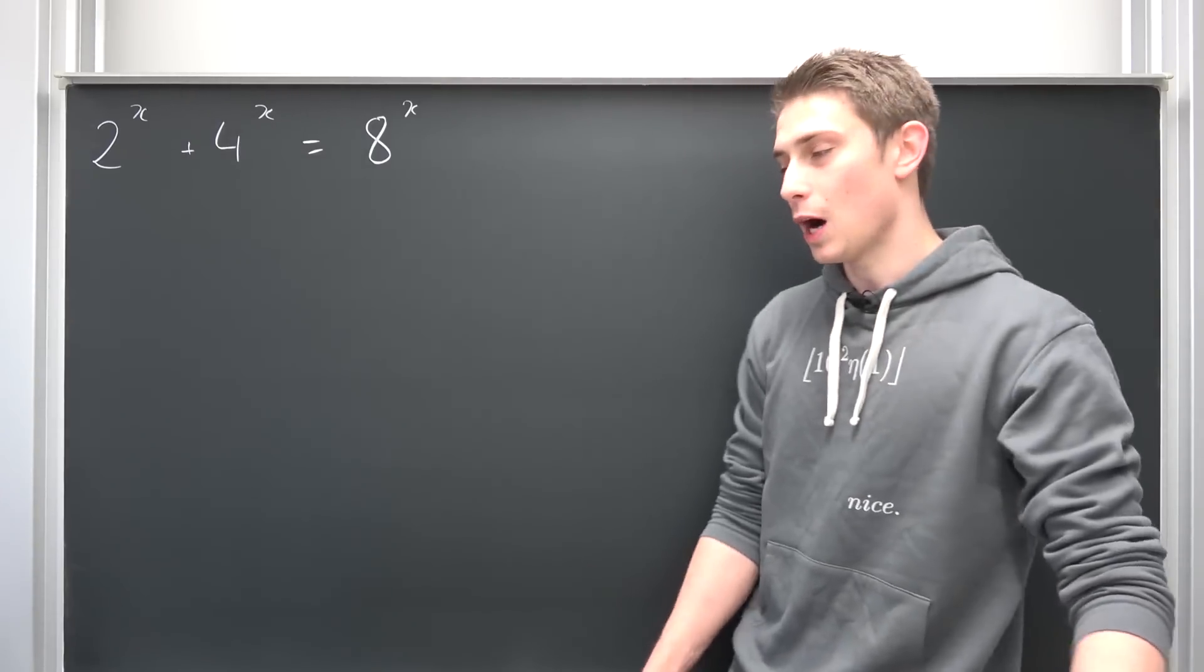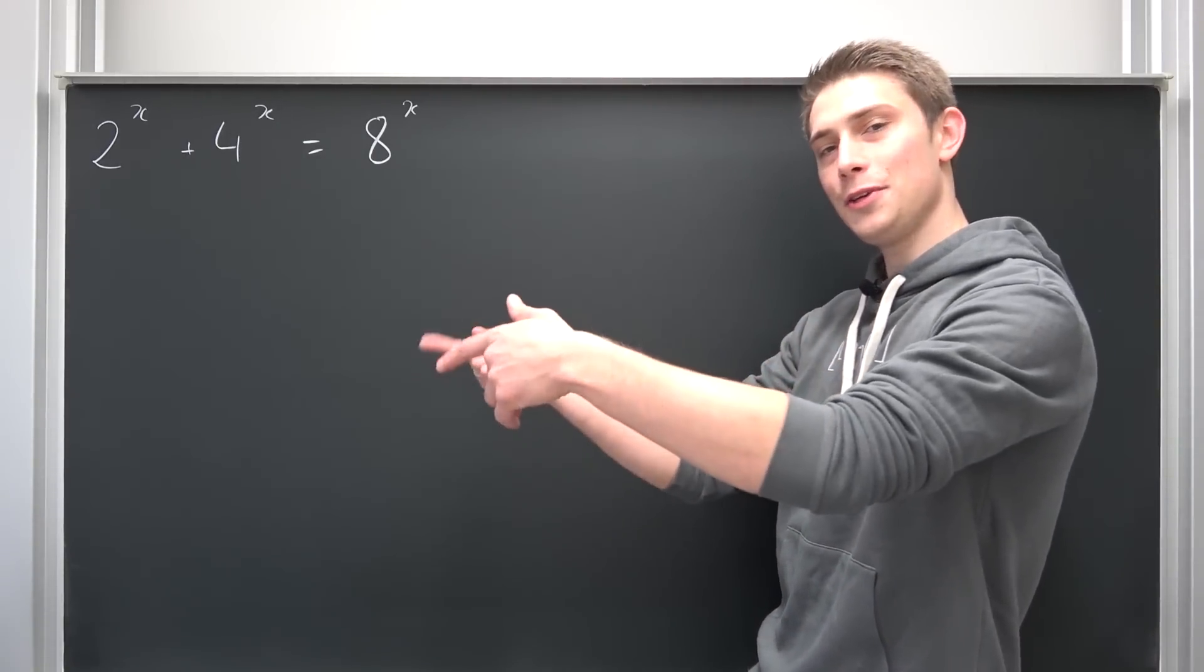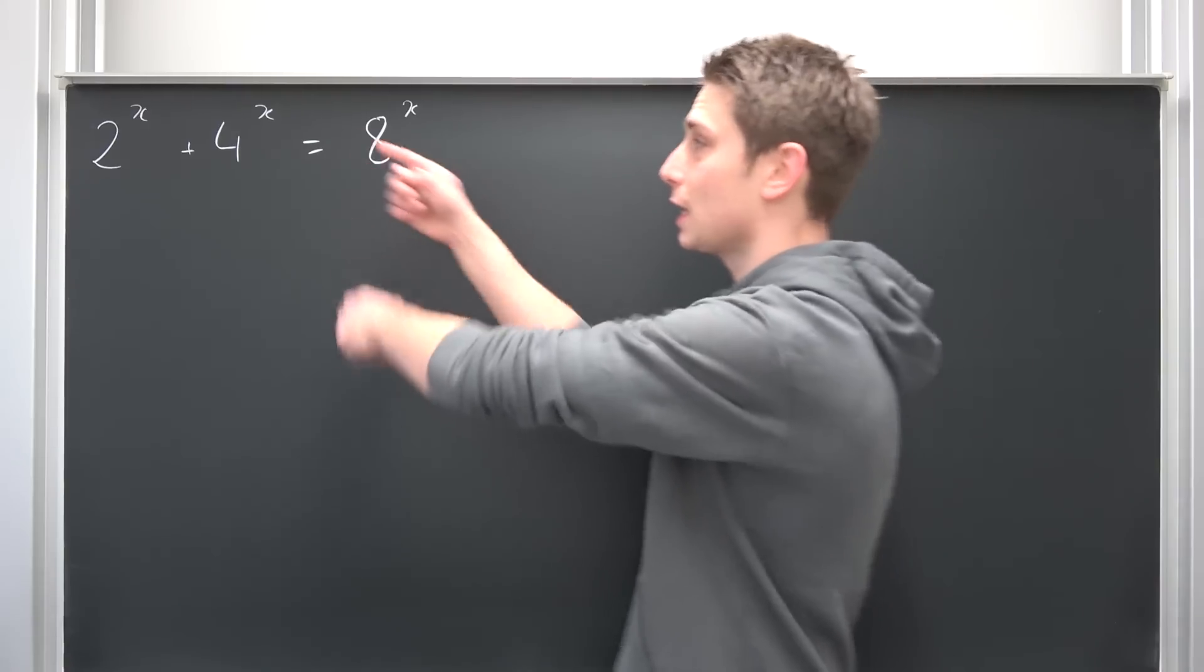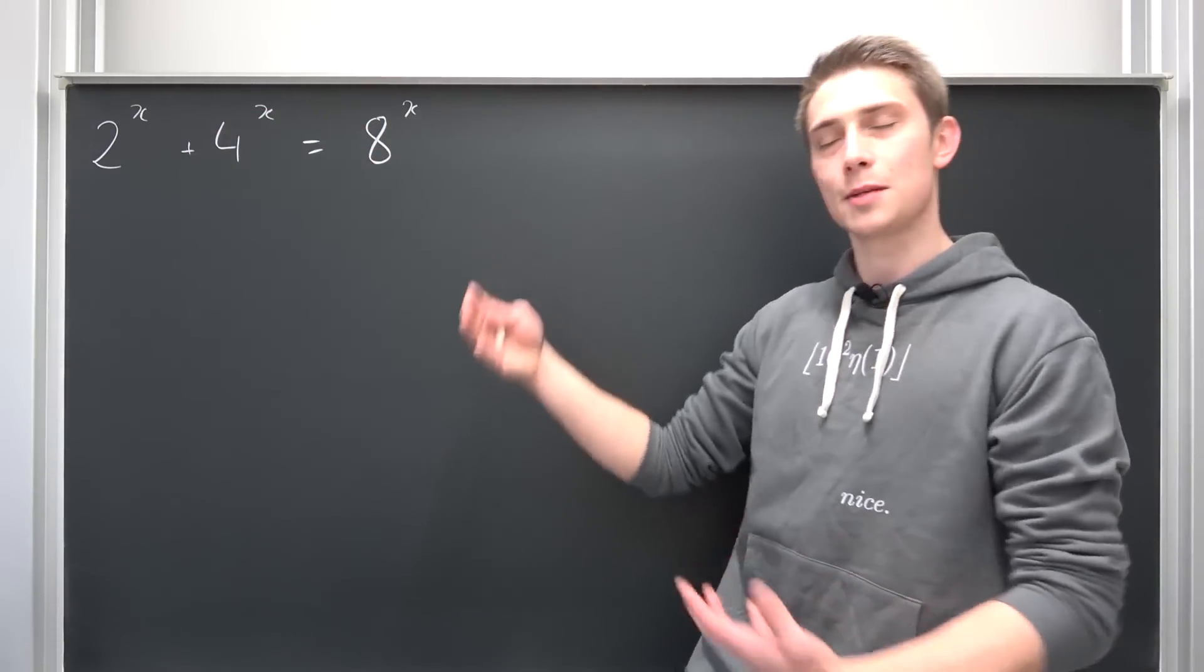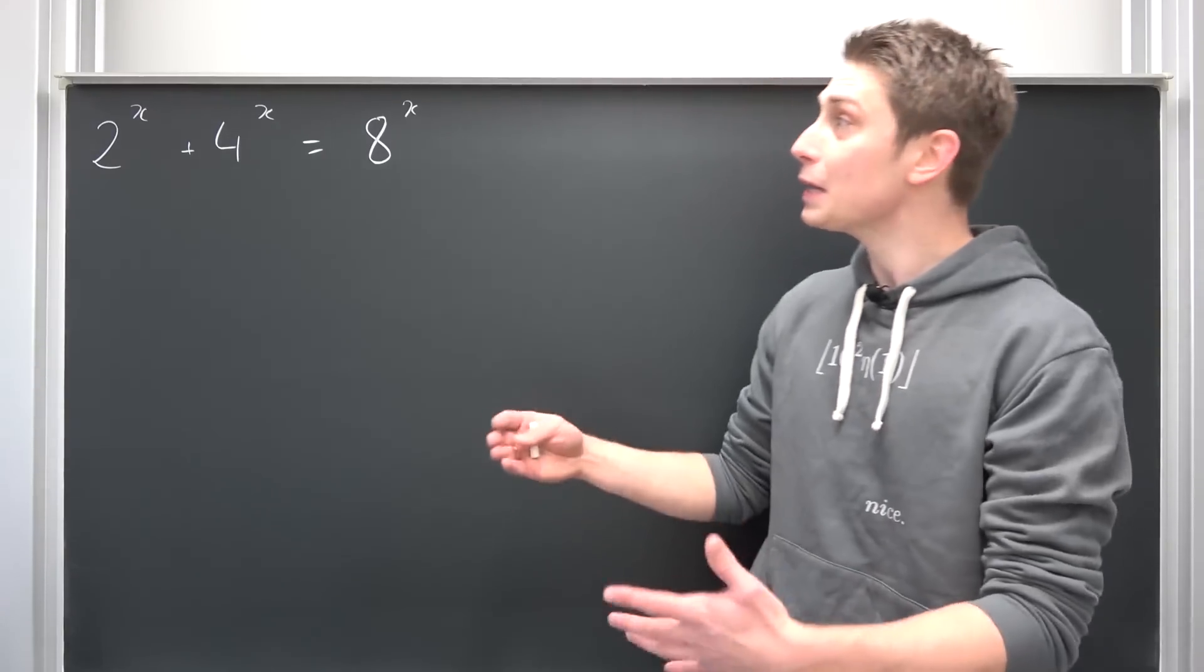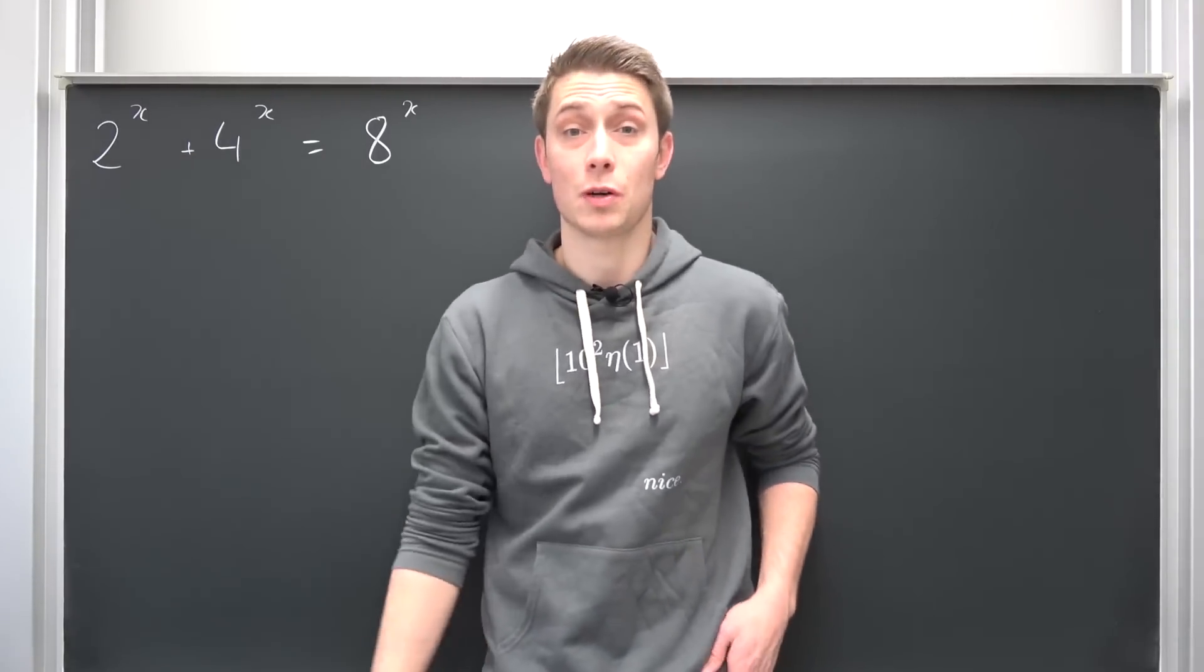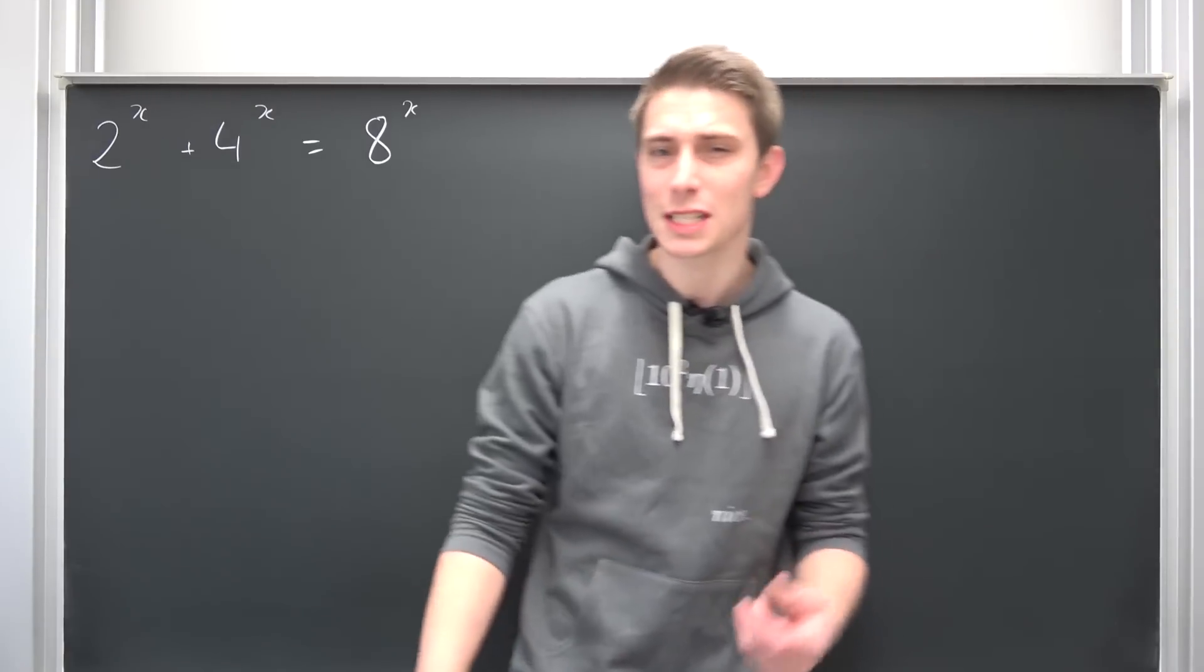But before we get to our new blackboard, I would like to take a look at this problem with you today, a pretty golden problem. It really doesn't seem exciting at first sight, but we would like to solve for x on this one: 2 to the x plus 4 to the x equals 8 to the x.